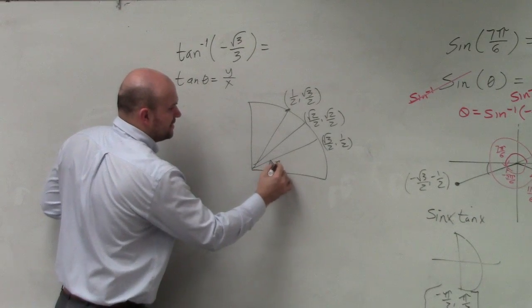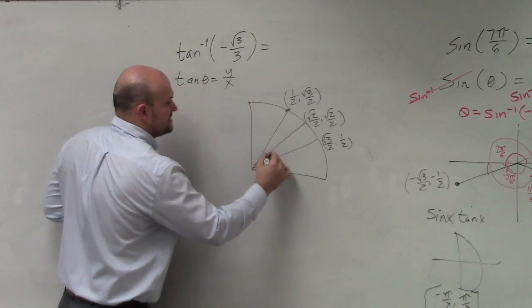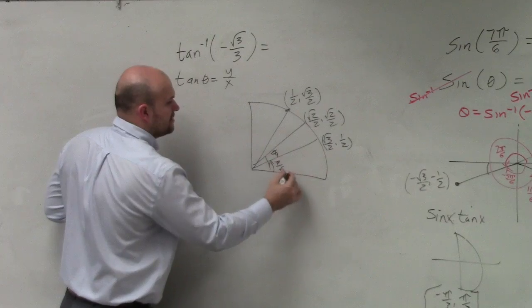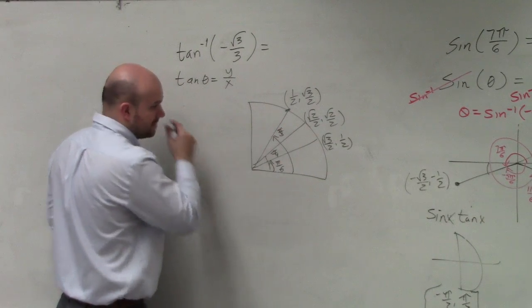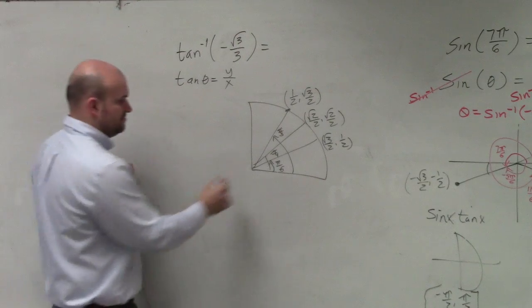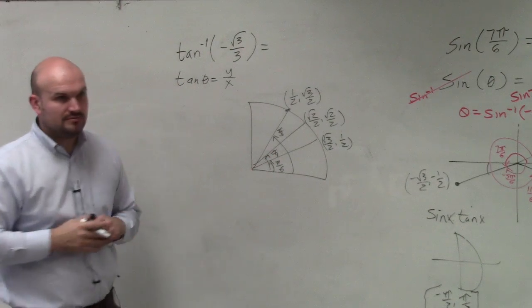And I know that this angle is pi over 6, this angle is pi over 4, that angle is pi over 3, correct? Everybody agrees with me? Kind of, no, so forth.